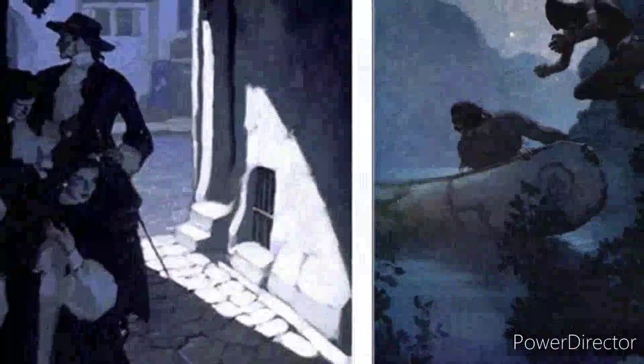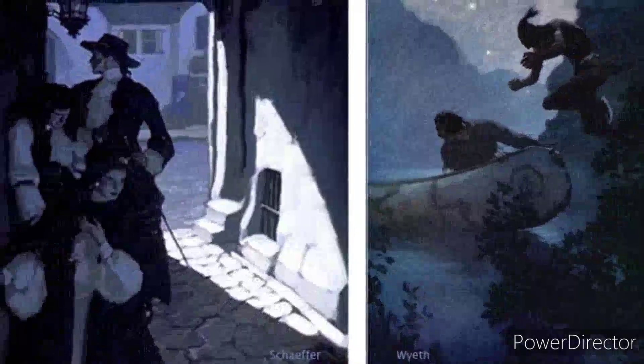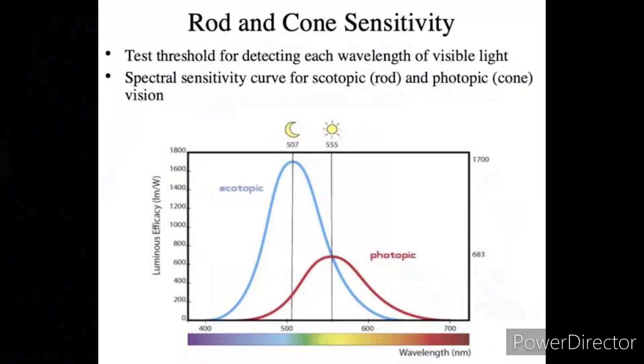The Purkinje effect occurs at the transition between primary use of the photopic cone-based and scotopic rod-based systems. As intensity dims, the rods take over and before color disappears completely, it shifts towards the rods' peak sensitivity.